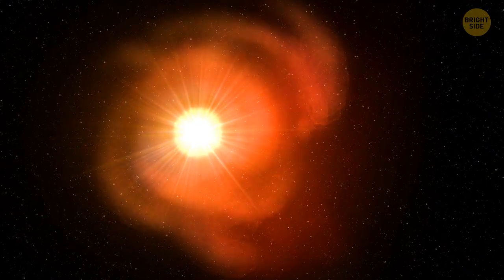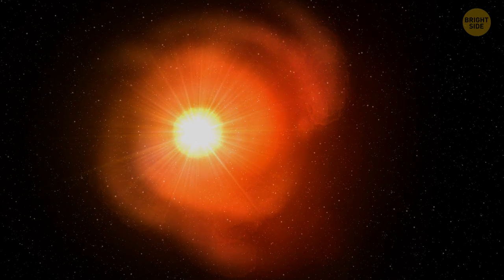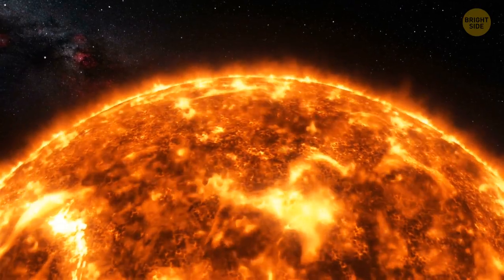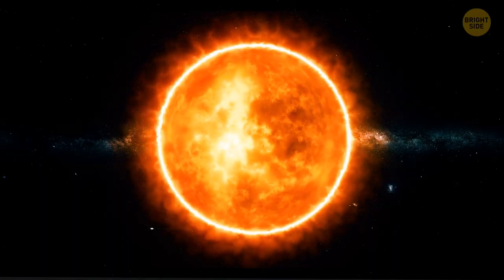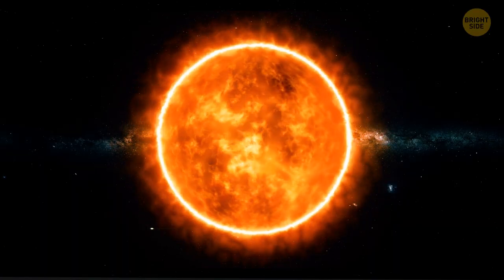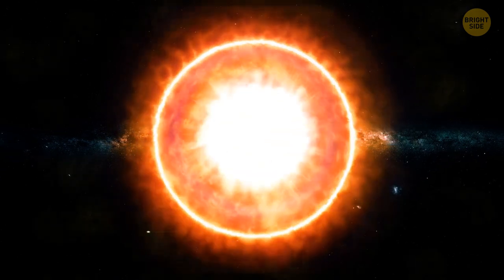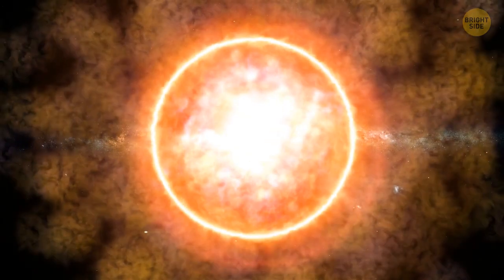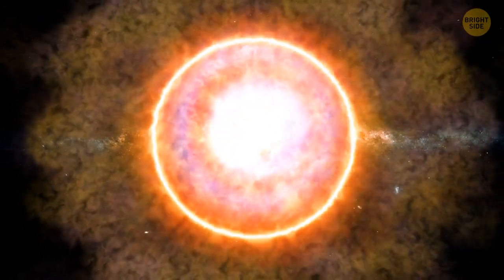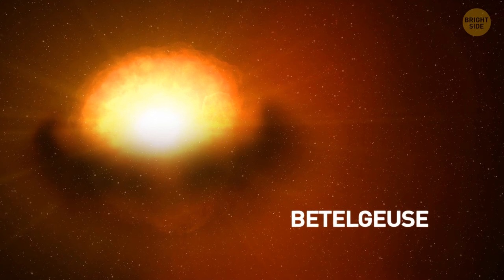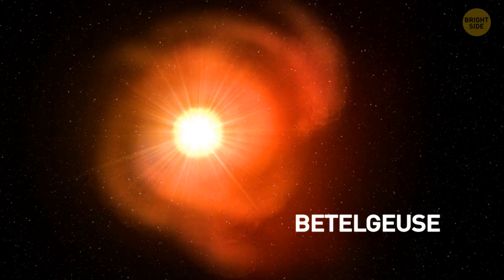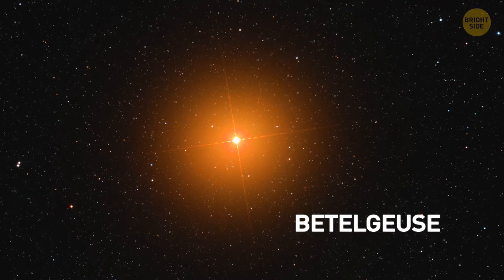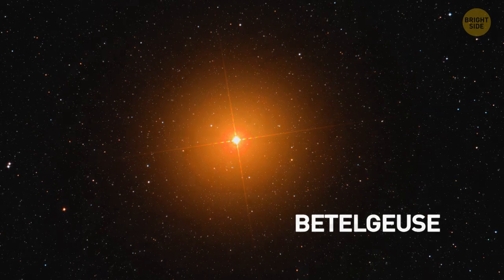This star emits most of its energy as infrared light, and it also indicates that its core is most probably still burning helium, and not something that would greatly increase the amount of heat, like carbon, for instance. Betelgeuse will still go supernova, but not for another one hundred thousand years. So you can cross it off your supernova list for the time being. And as for how to correctly pronounce Betelgeuse, you can say it any way you like. There are as many different pronunciations out there as there are people who think they know how to pronounce it correctly.